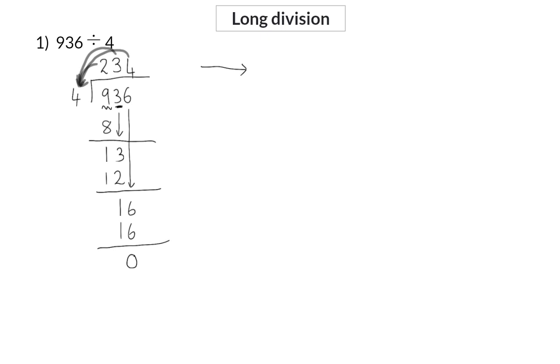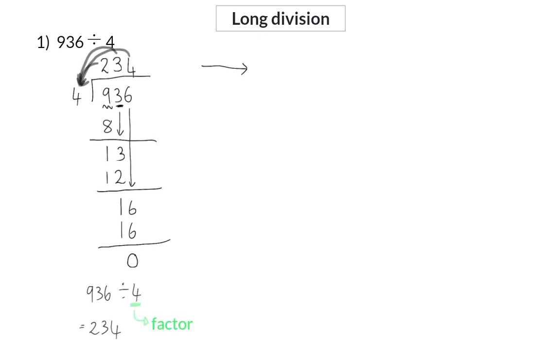This means that 936 divided by 4 is 234, with a remainder of 0. And, because of the remainder of 0, we can say that 4 is a factor of 936.